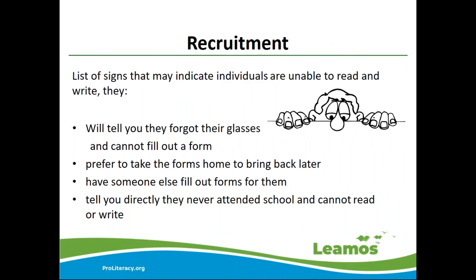Trying to find potential LLAMOS students can be really challenging. The first step is to discuss the Spanish literacy project with your internal staff, since many times they already know clients who need this resource. These individuals tend to shy away, so it's hard to identify them. Some signs: they might tell you they forgot their glasses or are wearing the wrong glasses and cannot fill out forms, or they'll prefer to take forms home to bring back later. Others will have someone else fill out forms for them. And in some cases, they will tell you directly that they never attended school and cannot read or write — this usually happens when there's already a relationship established with those clients.